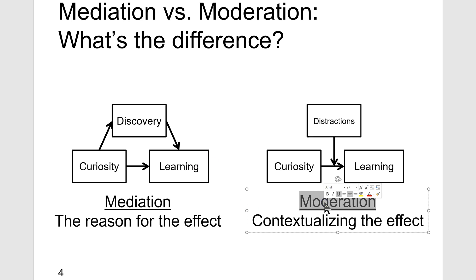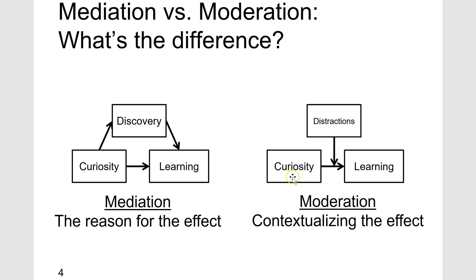A moderator is very different from that. A moderator just contextualizes the effect. So curiosity impacts learning — we understand that, there's some positive effect there — but this effect is different when you have more or less distractions. In the presence of few distractions, curiosity can lead to a lot of learning. In the presence of a lot of distractions, even if you have curiosity, not much learning might take place. So we would say that distractions dampen the positive relationship between curiosity and learning.